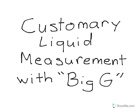Customary liquid measurement with Big G. We know that with customary liquid measurement we have cups, pints, quarts, and gallons. I want to show you a way to help you remember how many cups are in a pint, how many pints are in a quart, and so on. There's a little drawing we're going to do called the Big G. We're going to start with cups.